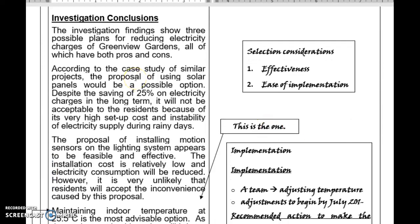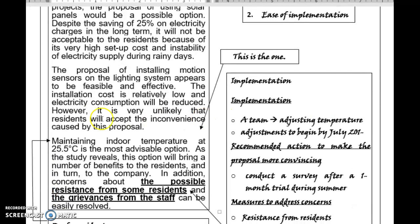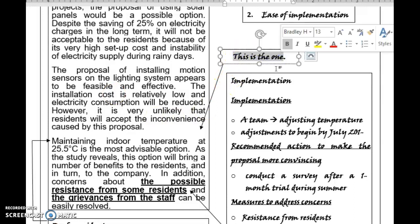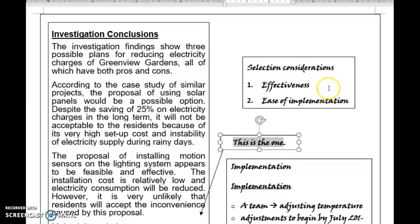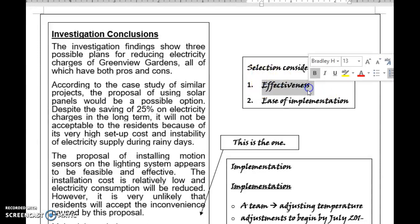In the investigation conclusions, we know that the proposal of maintaining indoor temperature at 25.5 degrees Celsius is being chosen. This is the one. That means this is the proposal to be chosen. And why would your boss like to choose this proposal? Due to the reason of effectiveness and ease of implementation.